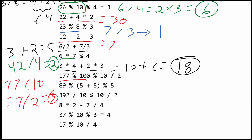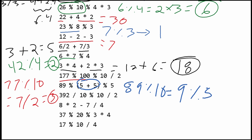Next, we have 89 modulus of the parenthetical value, which equals 10. So we have 89 modulus 10, which is 9. Then we take the modulus of 9 using 5, and that's going to give us 4. So our answer for this one is 4.